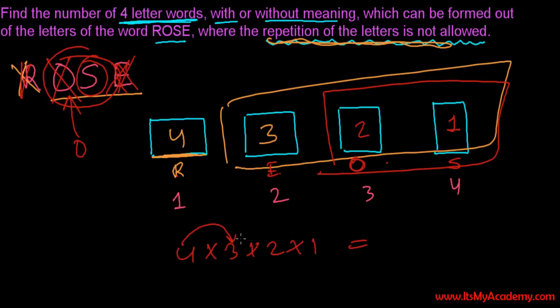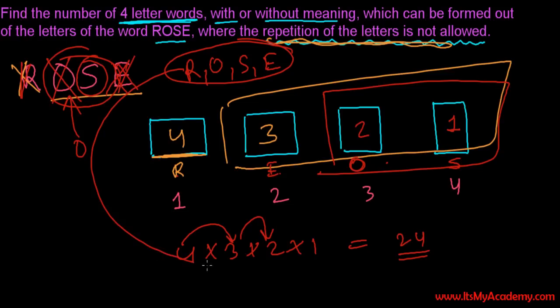Let me count it. Four times three - twelve. Twelve times two - twenty-four. So from the letters R, O, S and E, from these four letters we can form 24 four letter words. They may have meaning, they may not have meaning. And letters are not repeated. Keep in mind.